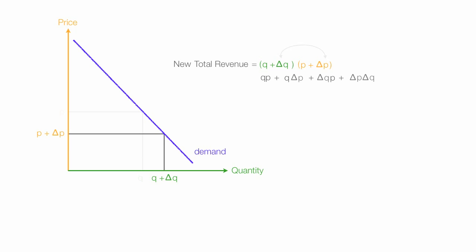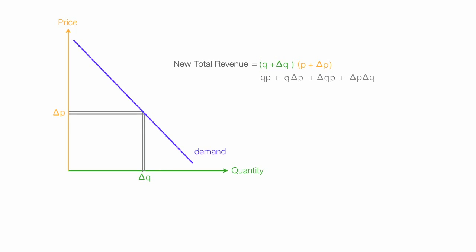In economics we deal with really, really small changes in price and really, really small changes in quantity. That makes something small times something small — we can ignore it. Really, really small times really, really small, we just ignore it.